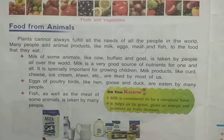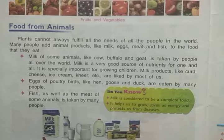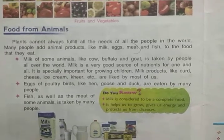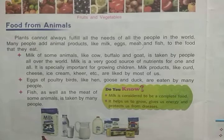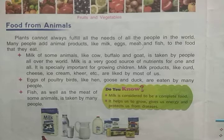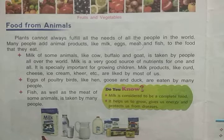Hello students. In the previous video we learned about the food that we get from animals. We learned that plants cannot always fulfill all the needs of all people in the world, so many people add animal products to their diet. We can get milk, eggs, meat and fish from animals. We also learned that milk is considered to be a complete food, because milk is a very good source of nutrients for one and all.